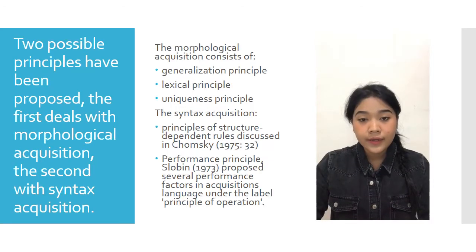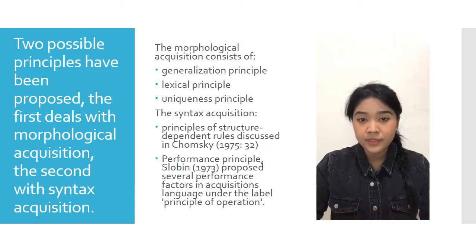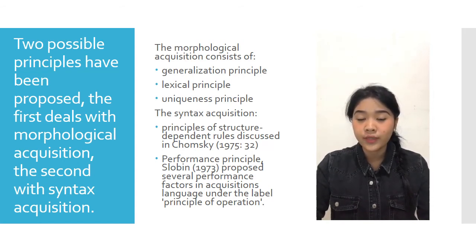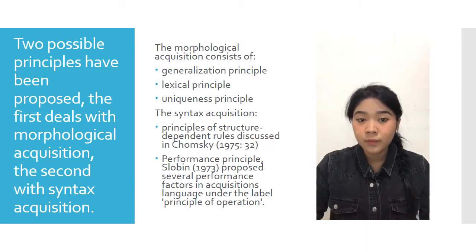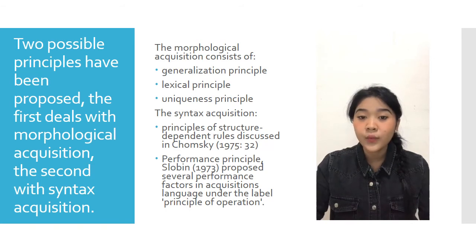There are some examples of the types of principles that will be part of an acquisition theory, starting with the competency factor. Two possible principles have been proposed: the first deals with morphological acquisition and the second with syntax acquisition.